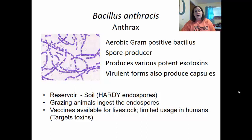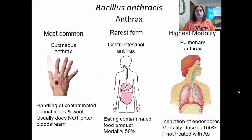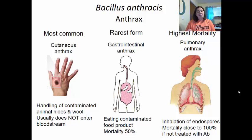Grazing animals ingest the endospores. Vaccines are available for livestock and have limited use in humans — they target the toxins and require six injections over 18 months. Some endospores have been known to survive for as long as 60 years. The most common form is cutaneous anthrax, from handling contaminated animal hides or wool, which usually does not enter the bloodstream and accounts for about 90% of anthrax cases. It enters through minor skin lesions or cuts and creates skin lesions.